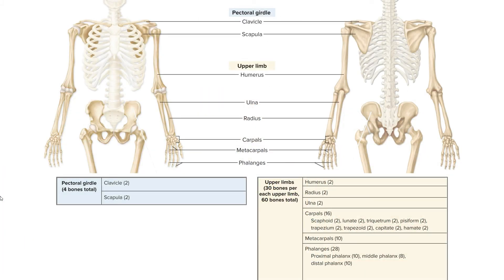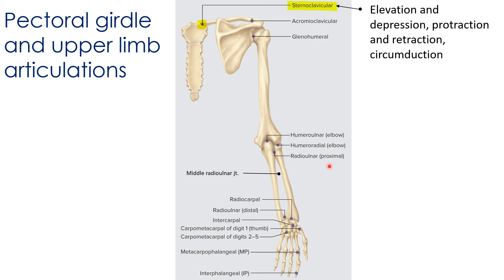Now let's make the transition to the appendicular skeleton. As in Module 1 where we covered the pelvic girdle and bones of the lower limb, here in Module 2 we'll look at the pectoral girdle and bones of the upper limb. The pectoral girdle connects the upper limbs to the axial skeleton and consists of a clavicle and scapula on each side. Upper limbs consist of 30 bones per limb: the humerus in the upper arm, radius and ulna in the lower arm, bones of the wrist, hand, and fingers — analogous to the lower limb's one thigh bone, two lower leg bones, and ankle and foot bones. We'll proceed proximally to distally.